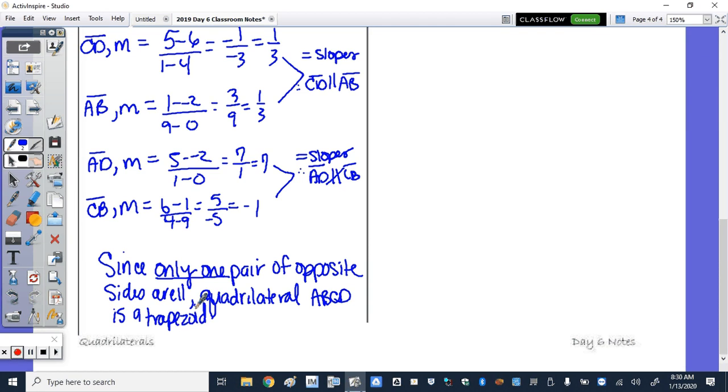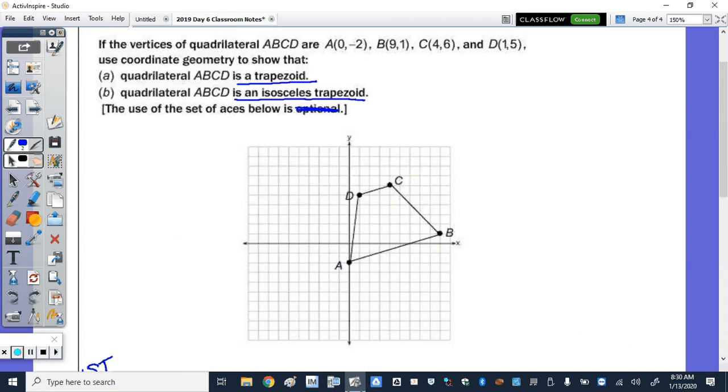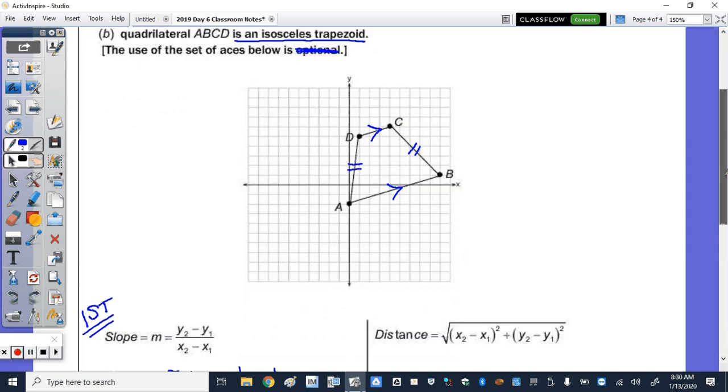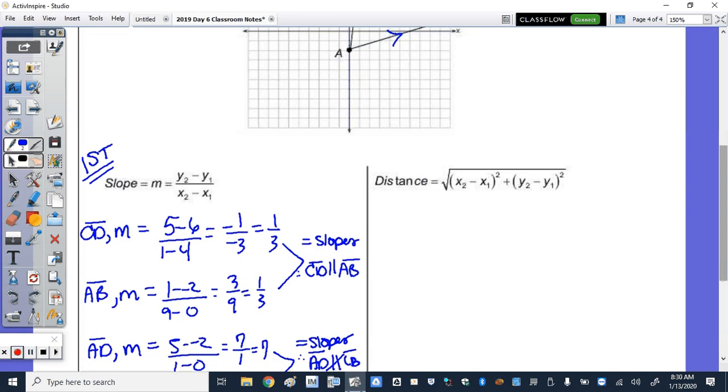Now to show that it's isosceles. Let's go back to the picture. I showed that CD is parallel to AB. Good. It's a trapezoid. Now I want to show that AD is congruent to CB. And that's using the distance formula. So now we're proving isosceles. So the legs, again, are AD. So the distance of AD and then the distance of CB.